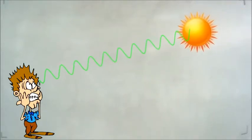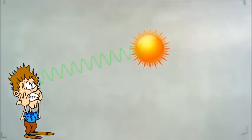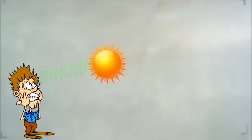Suppose now that the source starts moving towards us. When the source emits the next wave crest, it will be nearer to you, so the distance between wave crests will be smaller than when the star was stationary. This means that the wavelength of the waves we receive is shorter.